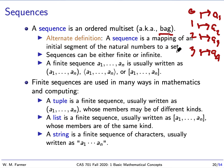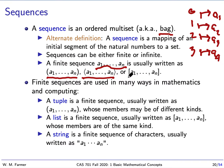A sequence can have a finite domain or an infinite domain — it's a mapping of an initial segment of the natural numbers. In mathematics, sequences are very often infinite; in computing, they're much more likely to be finite. There are different ways of writing a finite sequence: with no delimiters, with parentheses, with angle brackets, or with square brackets.